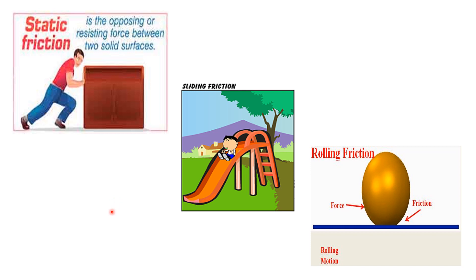Factors affecting friction: the nature of the surfaces that are in contact — that is, rough surface, smooth surface, liquid, and other surfaces. If the surface area is rough, friction is more, and if the surface area is smooth, the friction is less. The normal force acting on the object and friction force is independent of the area of contact.